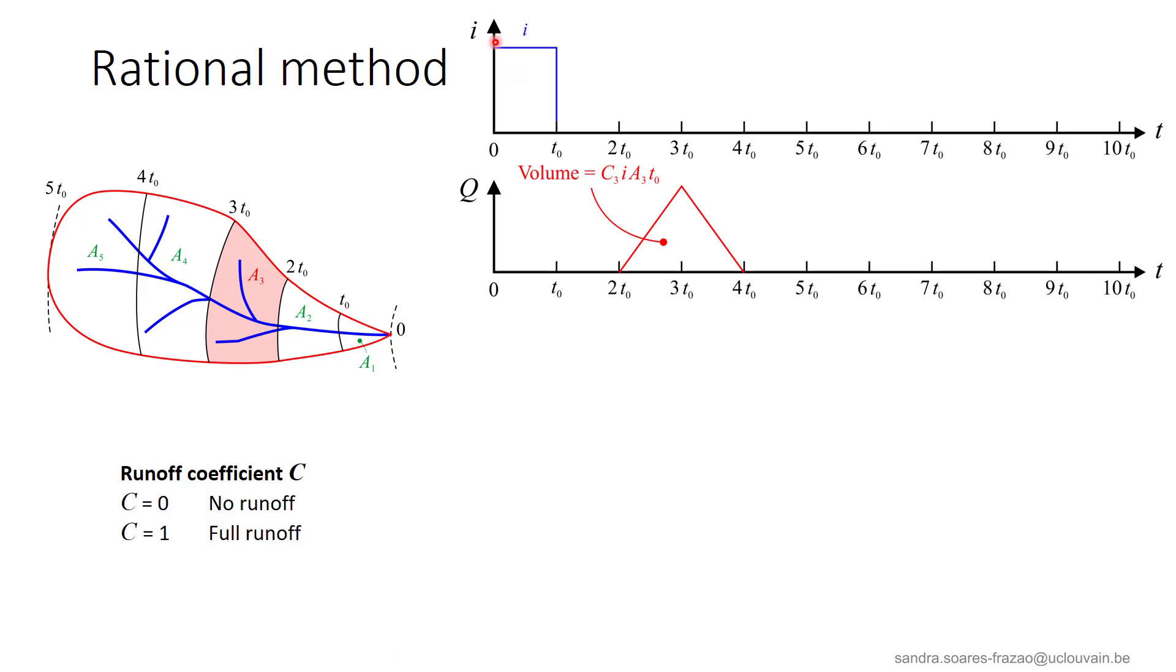The volume of rain here is I times T0 per unit area, and thus, it will be I A3 T0 over this subcatchment. However, not all the rain will produce runoff. This is accounted for by the runoff coefficient C, that indicates the fraction of the rainwater on the area that will flow as runoff. So, its value is comprised between 0 and 1, and depends on the soil coverage. For our subcatchment A3, the runoff coefficient is C3. So, the total volume of rain available for runoff is C3 I A3 T0.